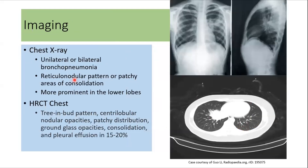Imaging can aid diagnosis. Chest X-ray may show unilateral or bilateral bronchopneumonia with a reticulonodular pattern or patchy areas of consolidation, more prominent in the lower lobes. CT scan can show a tree-in-bud appearance, centrilobular nodular opacities, patchy distribution of opacities, ground-glass opacities, consolidation, or pleural effusion in 15 to 20 percent of patients.